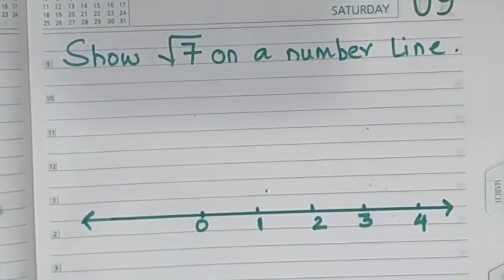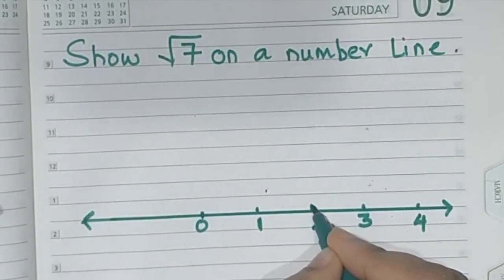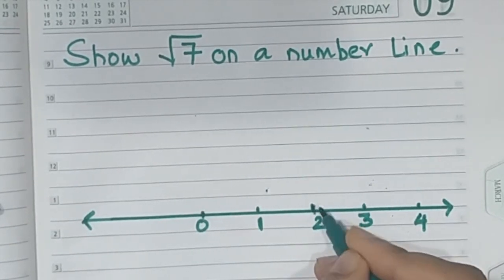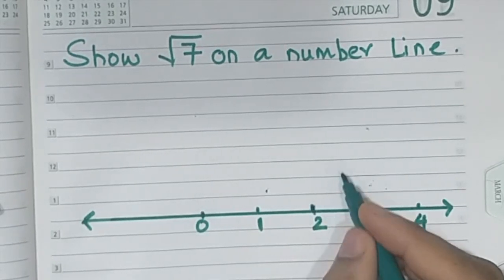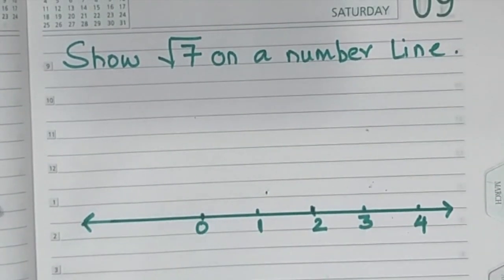Now what we have to do is, you already know that when we plotted root 5, we started from 2. So for root 7 also we'll start from here. We'll have to plot root 5 first, then root 6, and then root 7.